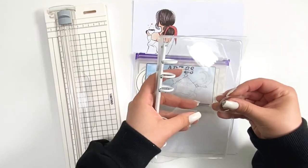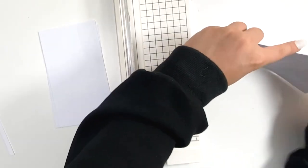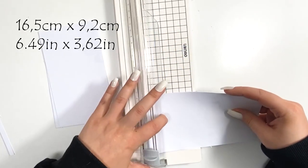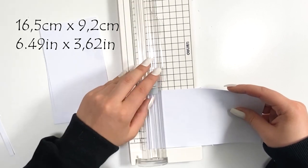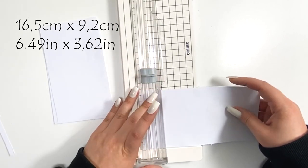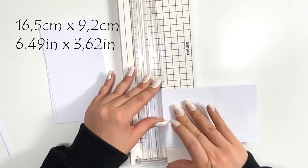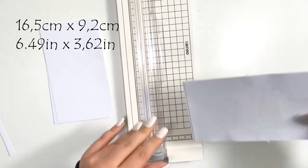At first I will take five white papers with the size of 16.5 by 9.2 centimeters, and in inches it's 6.49 by 3.62.